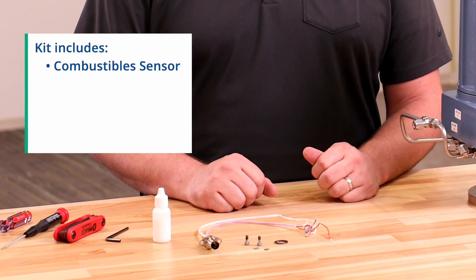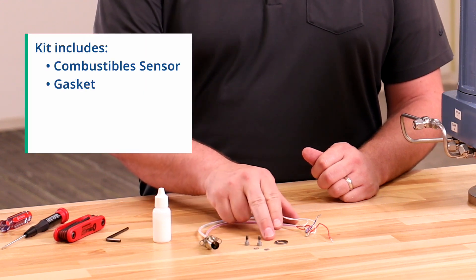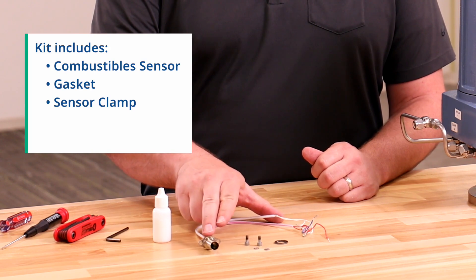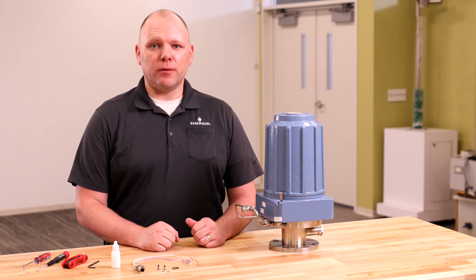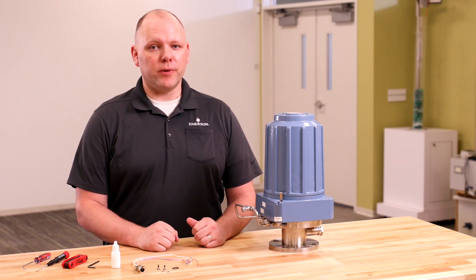This kit contains a combustible sensor, gasket, sensor clamp, socket head screws, and lock washers. To help ensure safety during replacement, make sure the power is disconnected and all components have cooled to room temperature.